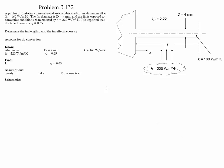Problem 3.132. In this problem we have a fin of uniform cross-sectional area made out of aluminum alloy. This fin is exposed to convective conditions. The diameter and the convection coefficients are given. It is reported that the efficiency of this fin is equal to 65%. We need to determine the length of the fin as well as its effectiveness.